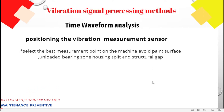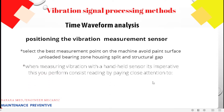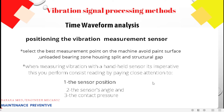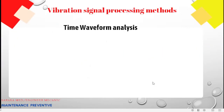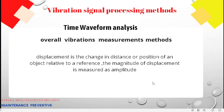When positioning the sensor, select the best measurement point on the machine — a right-angle surface, unloaded bearing zone, and housing. It is important to perform consistent readings by paying close attention to sensor position, sensor angle, and contact pressure. These three factors must be applied correctly to take accurate measurements of any problem on the machine.